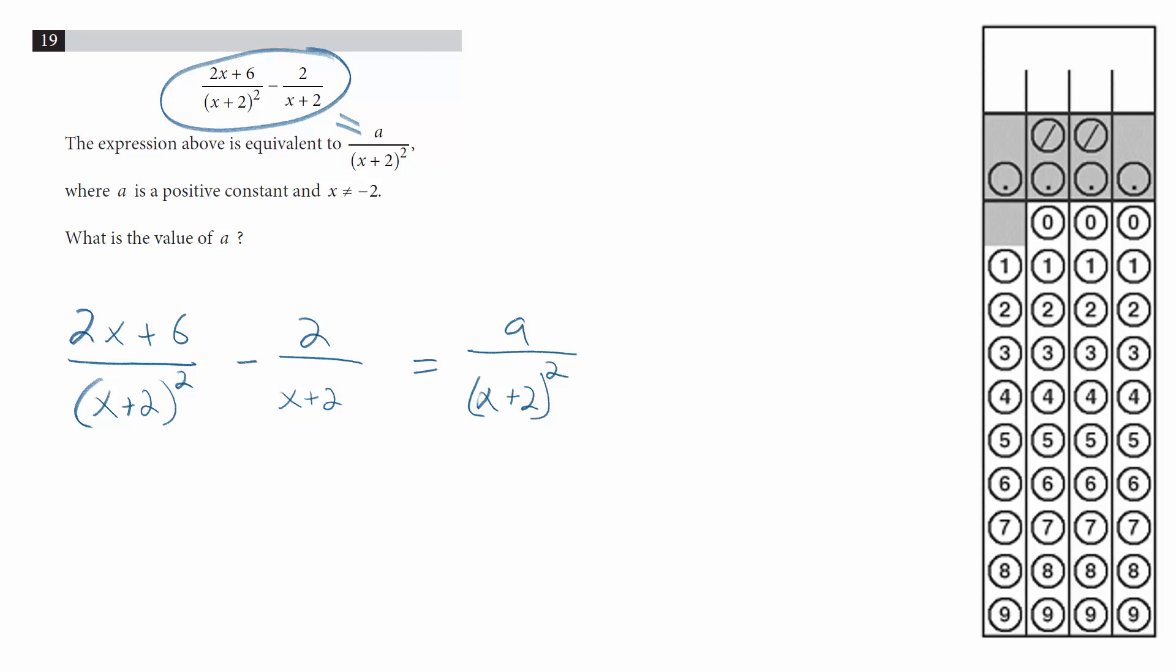To simplify this, these two portions here can be combined. They need to have a common denominator. They both have x plus 2 in their denominator, but this one only has a single term. This squared means there's two of them in there. So, we need to multiply both sides of both the numerator and the denominator by x plus 2.